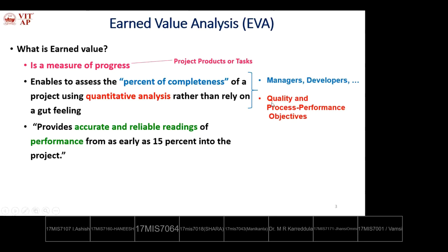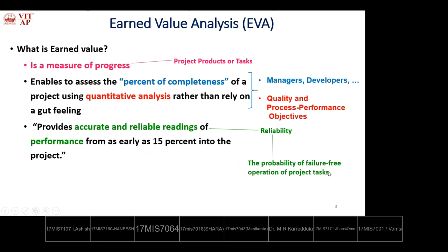Quantitative analysis means determining results in terms of quality and process performance objectives, which are defined in the initial project scope step. During development, we can inspect at any time from day one to day N, ensuring whether the defined quality is being achieved for all the project products. Earned Value Analysis provides accurate and reliable readings of performance from as early as 15 percent into the project.